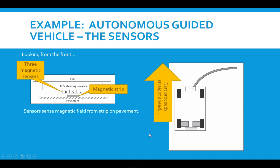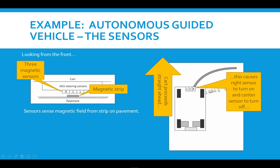Okay, this shows the vehicle move forward a bit. So the vehicle was going straight forward. Previously, there had been a straight section of magnetic strip on the pavement. So the cart is proceeding straight ahead. But now we want the cart to turn right. So the cart has moved straight forward, and that's made it so that the right sensor now turns on, or indicates positive, and the center sensor has turned off, or indicates negative.